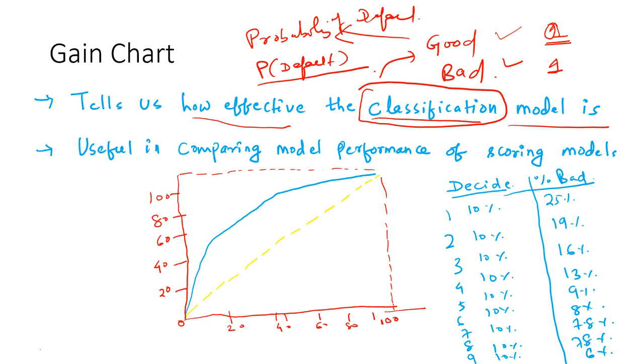We want to know what is the probability of default. You use a classification model like logistic regression or linear discriminant analysis to build the model, and now you have the probability score for all the customers in your portfolio. Now how do you know the model is performing well? There are several matrices which can be used to measure the performance of classification models. This is also known as a scoring model because we are scoring each customer by providing a score in terms of probability.